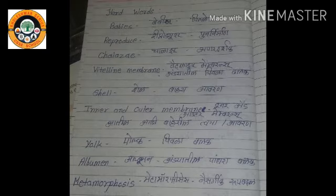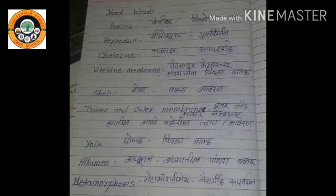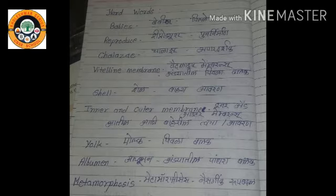Shell, spelling S-H-E-L-L, shell means 'by houran' (outer covering). Inner and outer membranes, spelling I-N-N-E-R A-N-D O-U-T-E-R M-E-M-B-R-A-N-E, means 'atilani bairil thwachakima houran.' Yolk, spelling Y-O-L-K, means 'piwadabalak.' Albumen, spelling A-L-B-U-M-E-N, means 'underthil piwadabalak.' Metamorphosis, spelling M-E-T-A-M-O-R-P-H-O-S-I-S, means 'nesargik rupabadar' (natural transformation).